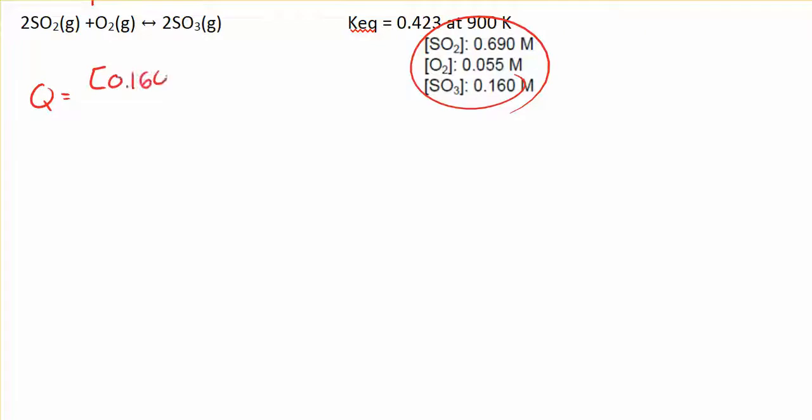Concentration of my product squared over the concentration of my reactants. Get a Q value equals to 0.978. Keq equals 0.423.